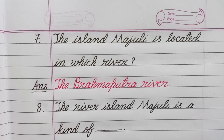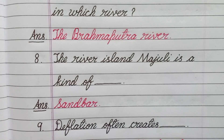Question number seven: The island Majuli is located in which river? Answer: The Brahmaputra river. Question number eight: The river island Majuli is a kind of what? Answer: Sandbar.